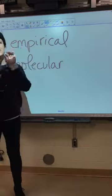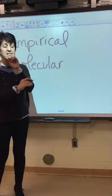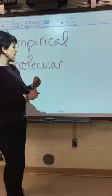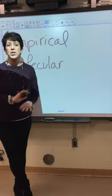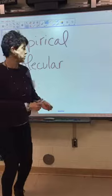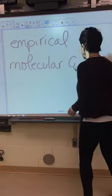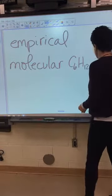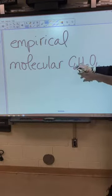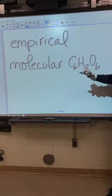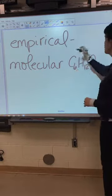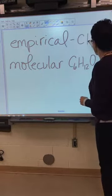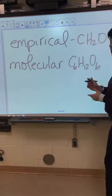Empirical means you've already reduced it. It is already a simplified formula. And molecular is your actual molecule. So, I want to use an example that you already know. You know glucose. So, glucose is C6H12O6. If you reduce that down, you can divide each of these by 6. So, the empirical, or the reduced or simplified formula, would be CH2O.